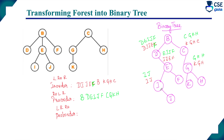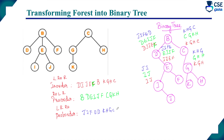Post-order traversal (left, right, root): for node I — no left, right is J, root is I. For E — left gives J, I; right is F; root is E. For D — no left, right gives J, I, F, E; root is D. Right subtree: left is K, right is H, root is G; then root C (no right). Complete post-order traversal is: J, I, F, E, D, K, H, G, C, B. We have converted two forests into a binary tree and implemented all three traversals.